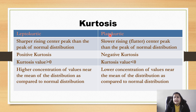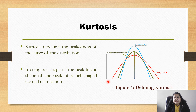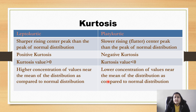For platykurtic curves, the peakness is less than the normal distribution. In the figure, the red curve is platykurtic. It has negative kurtosis — the kurtosis value is less than zero — and there is a lower concentration of values near the mean compared to the normal distribution.